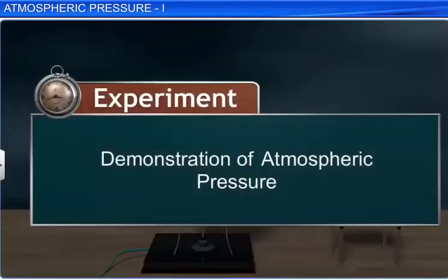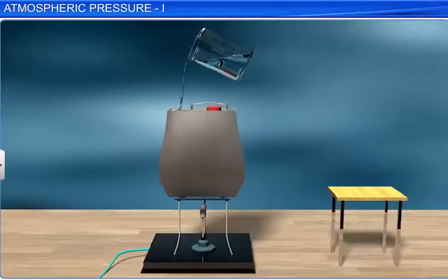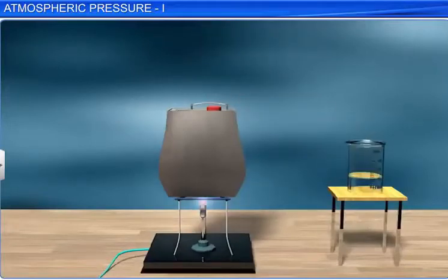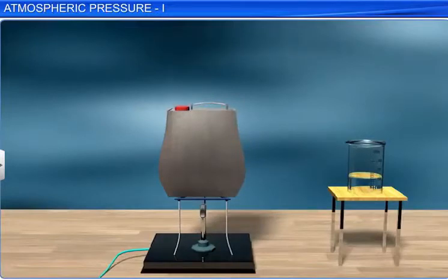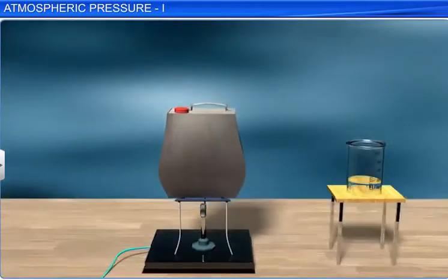We can demonstrate the presence of atmospheric pressure with a simple experiment. First, pour some water into an empty can. Then heat the can till the water starts turning into steam. Next, stop heating the can and close it using a lid. Now, pour some cold water on the can. You will observe that the can gets crumpled.